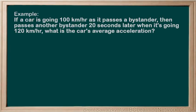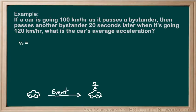First step: let's lay out what we know — get organized. V0, also called Vi in some cases, represents the original or initial velocity — the velocity at the start of our event. Let's clarify our event: an event is a period of time over which a change has taken place. We could consider the event to be from when the car started to when it passed the first bystander, or from when it passed the first bystander to when it passed the second.